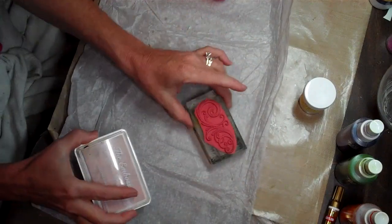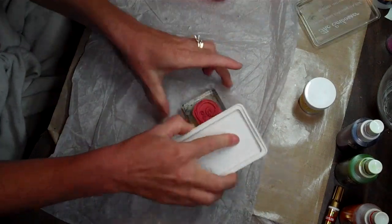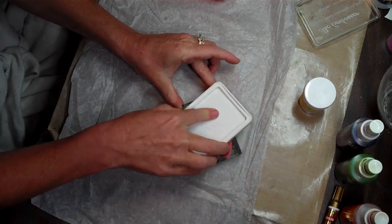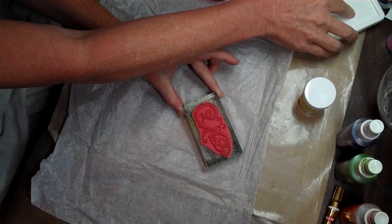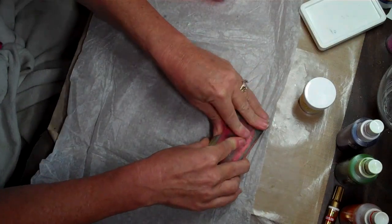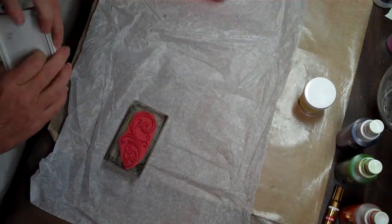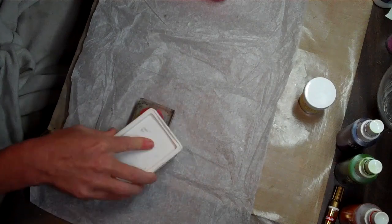So, first thing you want to do is ink up your stamp. Now, this is a clear ink and we are stamping on a white piece of tissue paper. So, guess what? You ain't going to really see it, but just trust that it's there. I usually stamp two, maybe three images before I start putting some embossing powder on there.